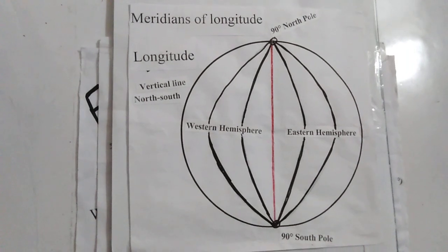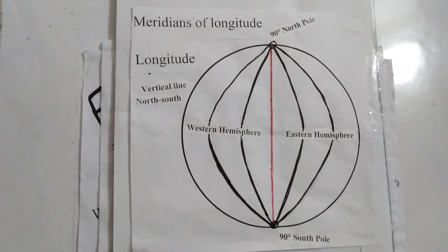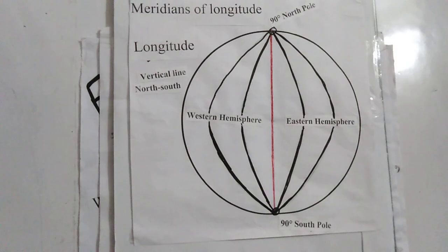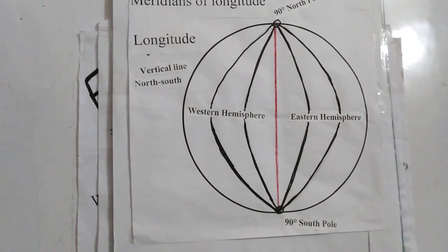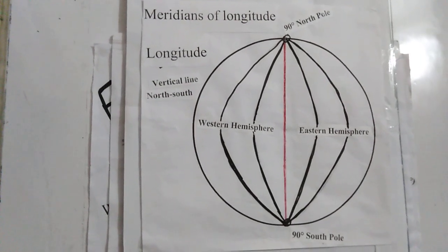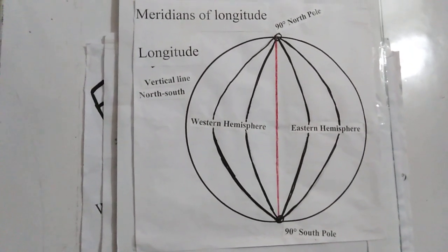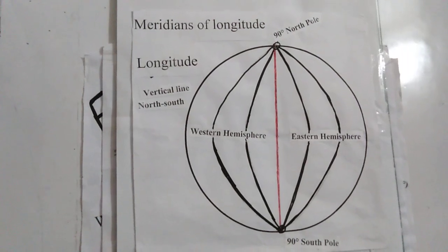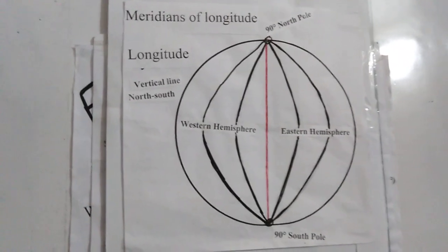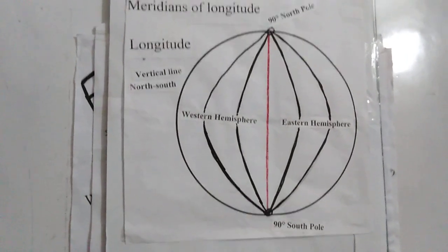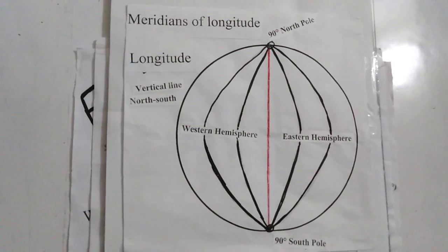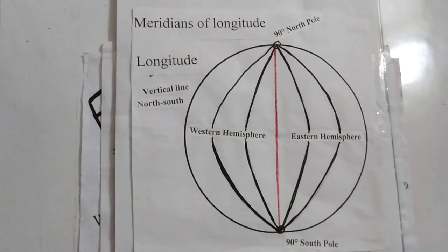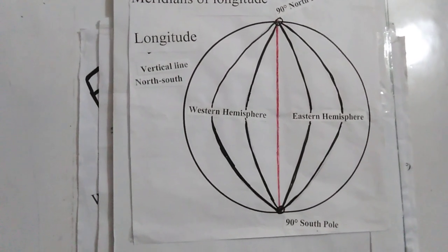Now, meridians of longitude. Like the prime meridian, a total of 360 vertical lines intersect the equator and connect the north pole and the south pole. These semicircle lines are called meridians of longitude. The length of all meridians is equal. The highest meridian is 180 degrees. In the eastern hemisphere there are 180 meridians, and similarly in the western hemisphere there are 180 meridians. With the help of meridians of longitude, we can determine the time of a place.